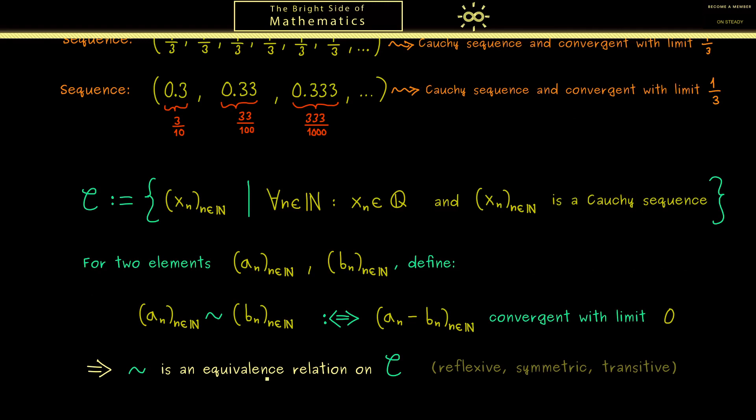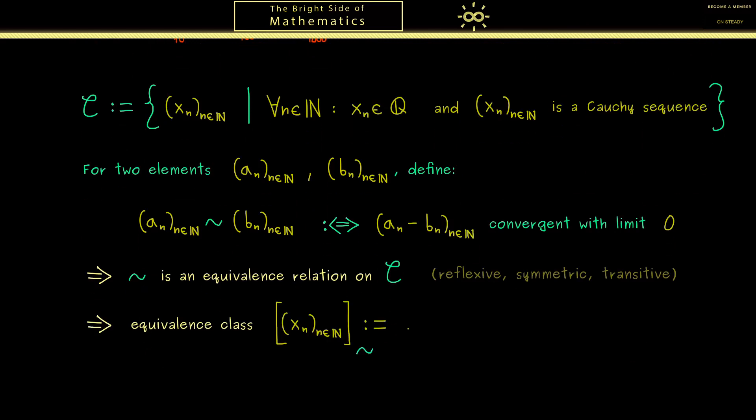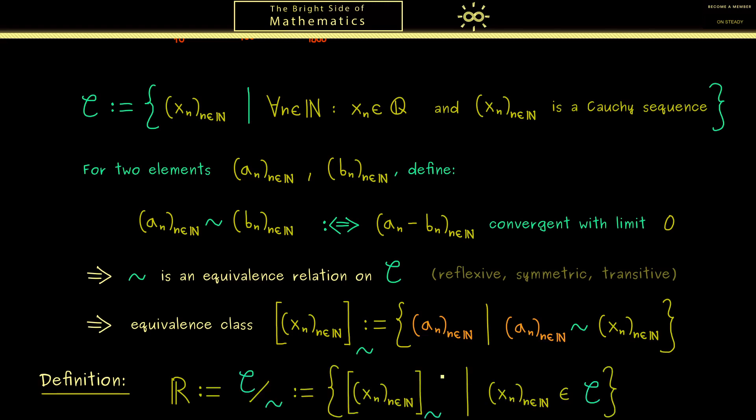Now, as always, when we have such a nice equivalence relation, we can go over to the boxes where we put in the equivalent Cauchy sequences. And we call these boxes equivalence classes. By definition, the equivalence class of (xₙ) is just a set of all Cauchy sequences that are equivalent to (xₙ). And therefore, this equivalence class now uniquely represents one point on the number line. To put it in other words, we now can actually define the real numbers. The set R is just given by the set of all equivalence classes, so the set of these boxes defines the complete number line.